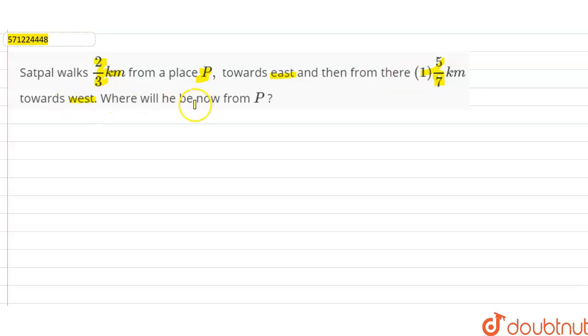Firstly, the directions are like: this is north, this is south, this is east, and this is west. Now let's say this is place P.